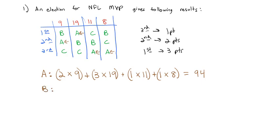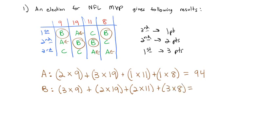Then we look at B. We see B coming in first place. That's worth three points times the nine votes, plus then B comes in second place, two points times the 19 votes, plus B coming in second place again, two points times the 11 votes, plus B comes in first place, three points times those eight votes. And when we multiply that out, B ends up with 111 points.